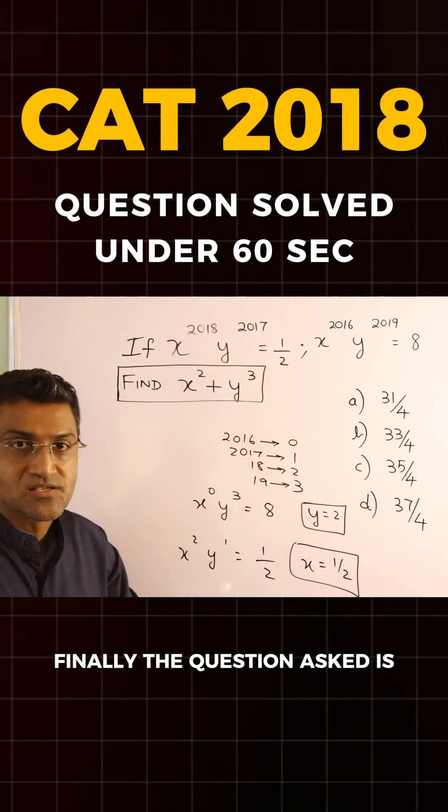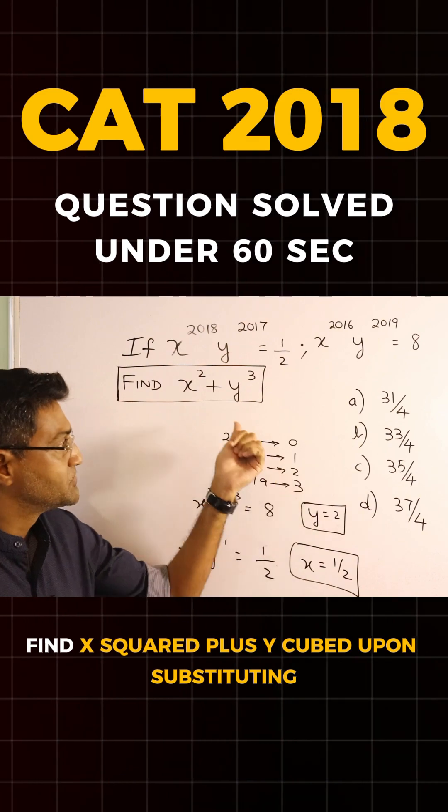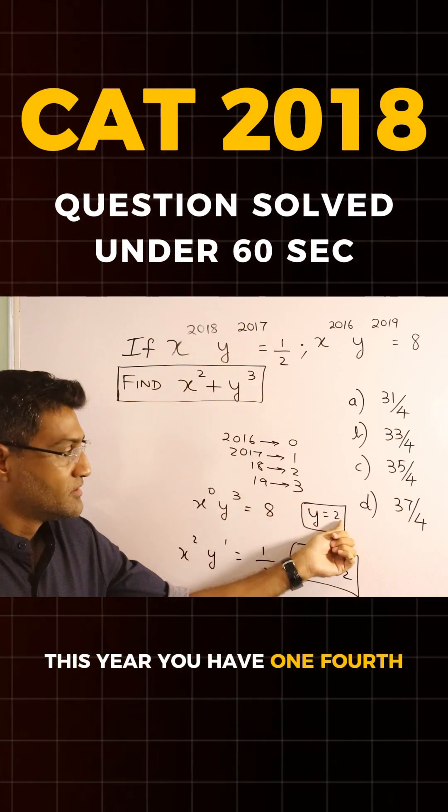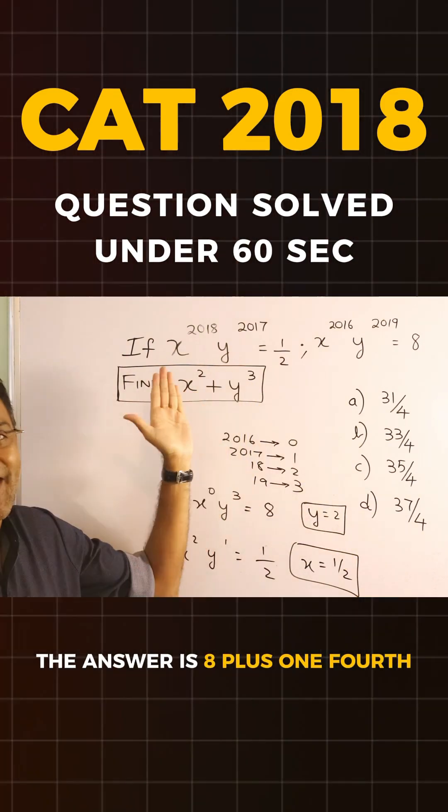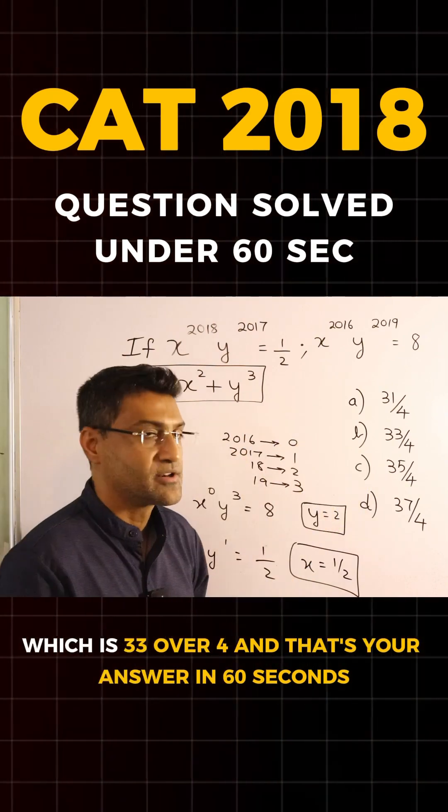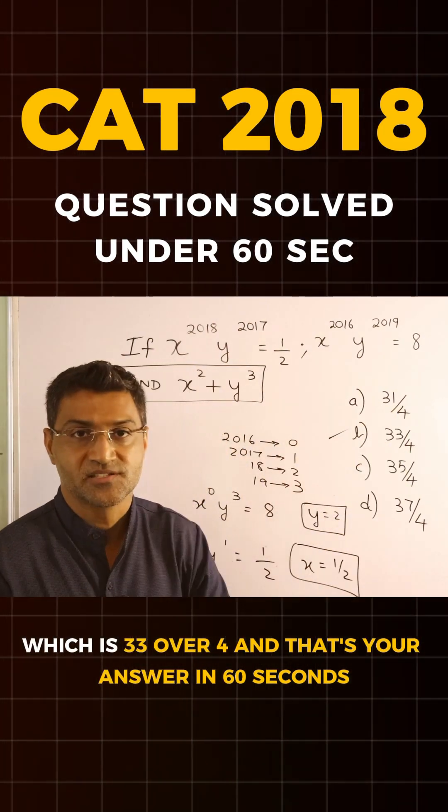Finally, the question asked is find x squared plus y cubed. Upon substituting this here, you have 1 fourth. This here, you have 8. The answer is 8 plus 1 fourth, which is 33 over 4. And that's your answer in 60 seconds.